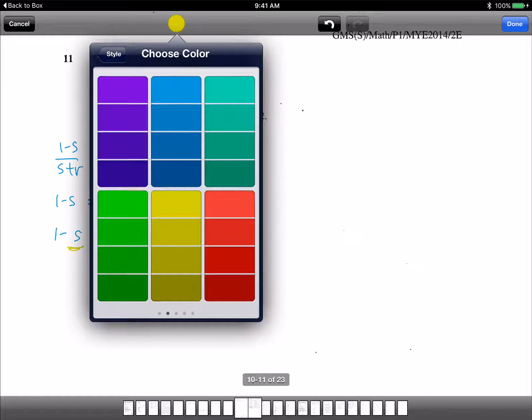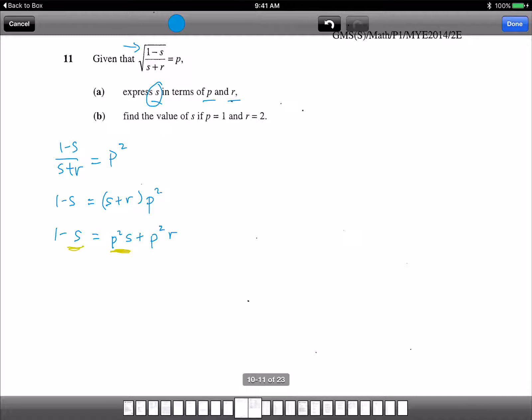So we continue. Remember the yellow terms go to the left hand side. Everything else throw to the right hand side. So we get negative S, negative P squared S equals to P squared R minus 1.